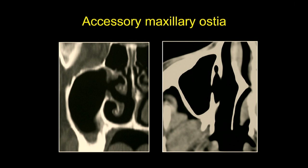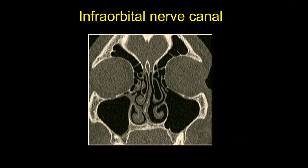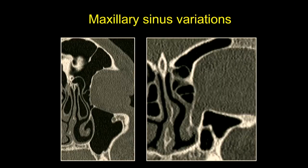One variation to be aware of is an accessory ostium posterior to the OMU, which when present can result in recurrent sinusitis — the surgeon needs to combine the two ostia to prevent recurrence, so we should report this when there is maxillary sinusitis. The infraorbital nerve canal runs in the superior wall of the maxillary sinus or the inferior wall of the orbit and can be dehiscent into the maxillary sinus. The maxillary sinus may also contain a septum attached to this nerve, and traction on the septum during surgery could injure the nerve — all such variations are worth reporting.